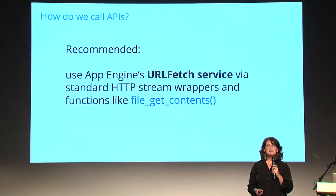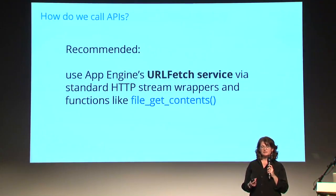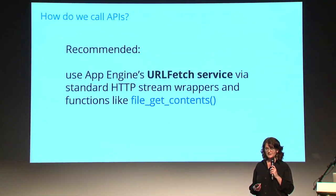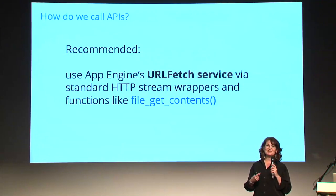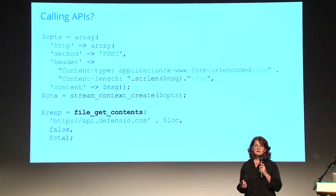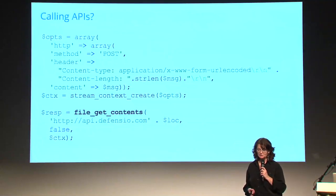Now the database is connected. Next we look at how we handle HTTP requests. The recommended way on App Engine is to use the URL fetch service — an infrastructure for supporting highly scalable HTTP requests. It's very transparent because you just use it via HTTP stream wrappers and familiar functions like file_get_contents. In a few places in the Joind.in code we replace calls to fsockopen with file_get_contents, for example making a POST request to defensio.com.